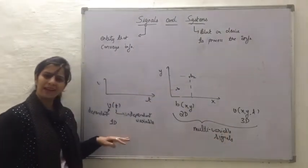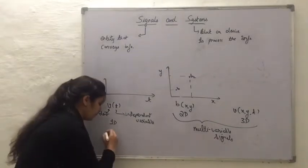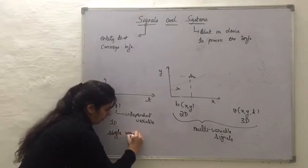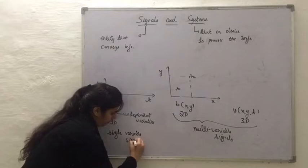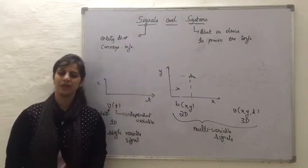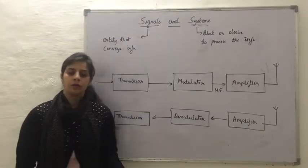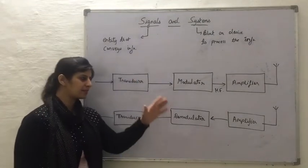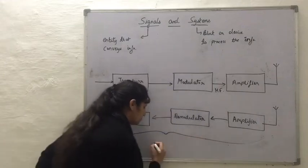A one-dimensional signal is called a single-variable signal. For this course, Signals and Systems will be restricted to single-variable signals only. To have a more elaborative view on signals and systems, let us consider a set of blocks that make up the communication system.